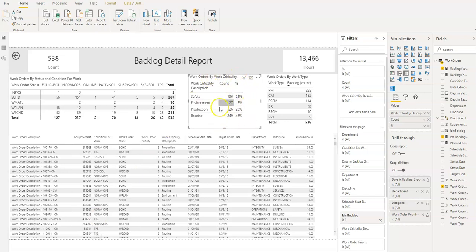We've got an example here with a table that has four rows and each one of these rows is a category. In this example it's work criticality description and these categories could be anything, but for this example it's safety, environmental, production, and routine.